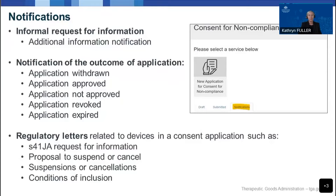Another type of notification is one advising the sponsor of the outcome of a submitted application. These include consent approval or not approved notifications, a notification regarding an application withdrawal, as well as consent revoked and consent expired notifications. For approved consent applications, the approval notification will be the one you are required to respond to and submit evidence of compliance for all devices before the end of the consent period. We will cover this in more detail in the live demonstration.